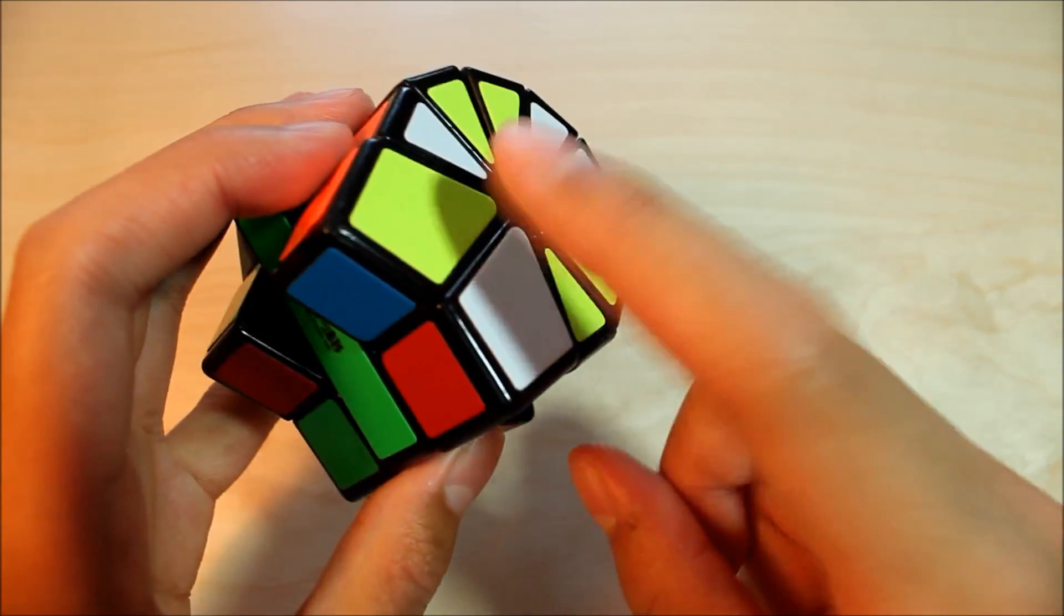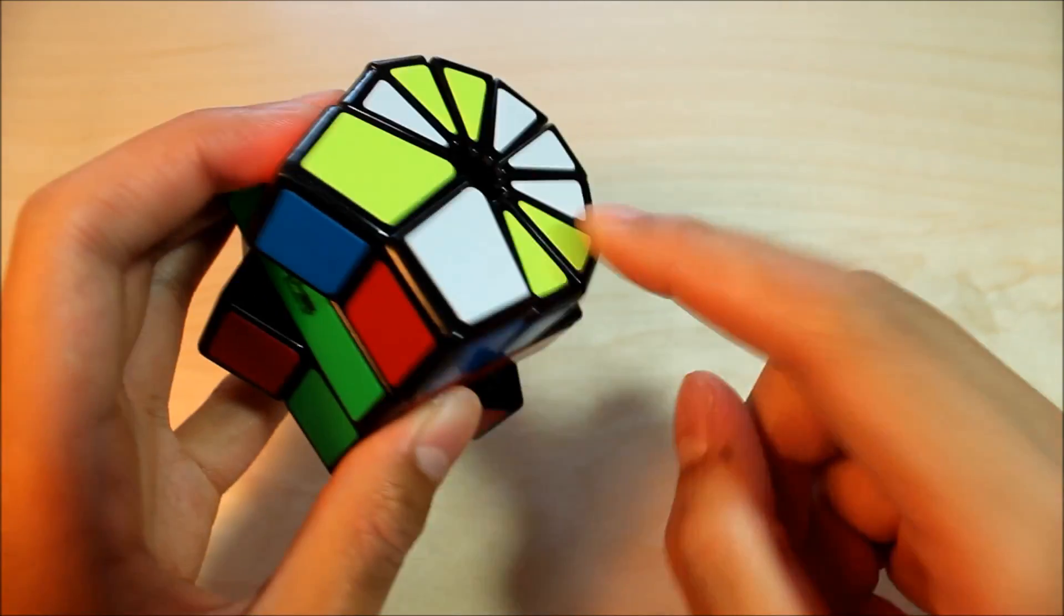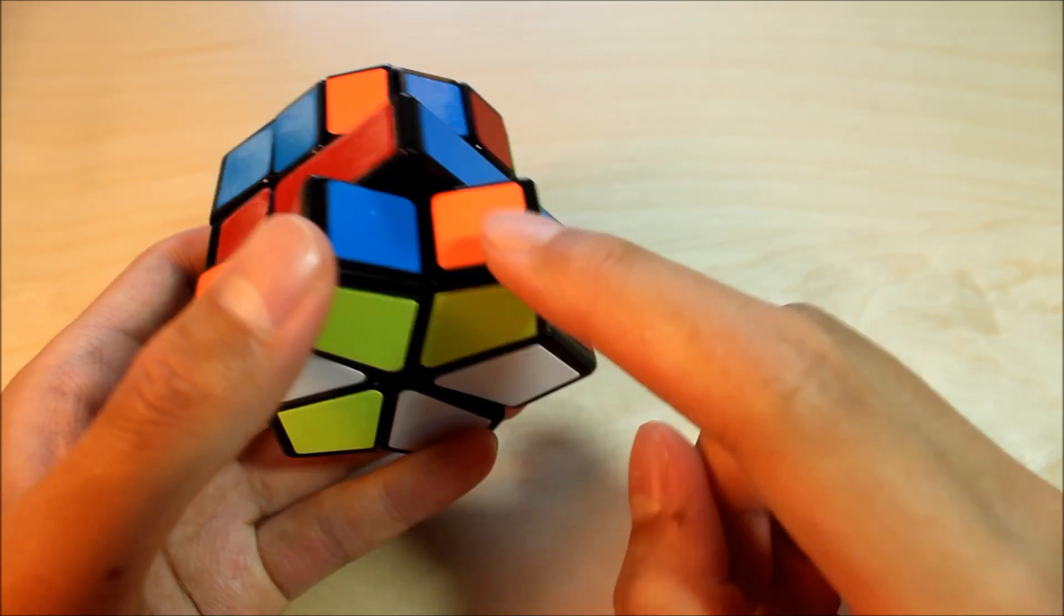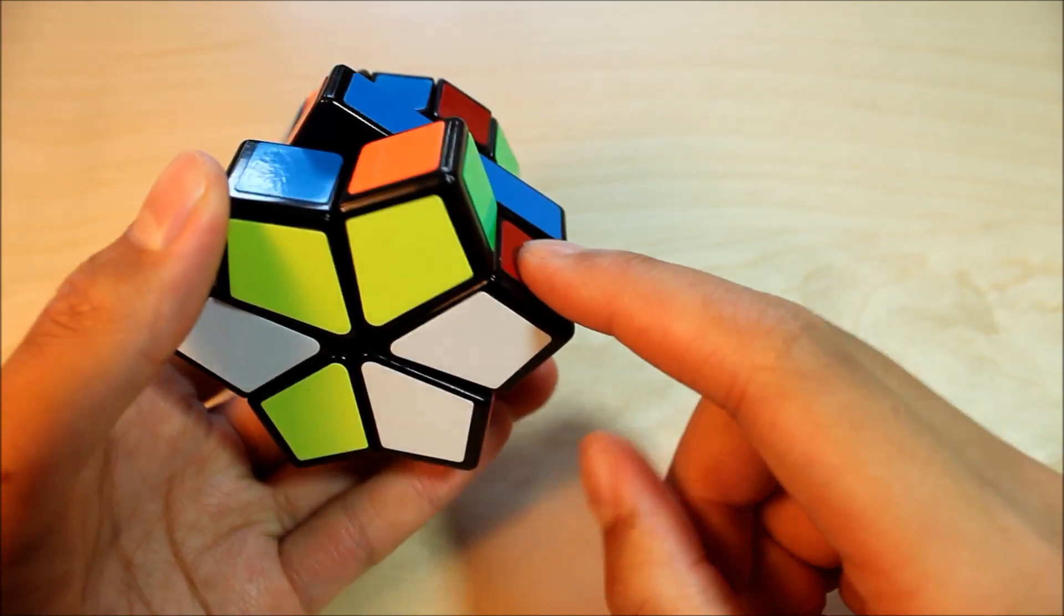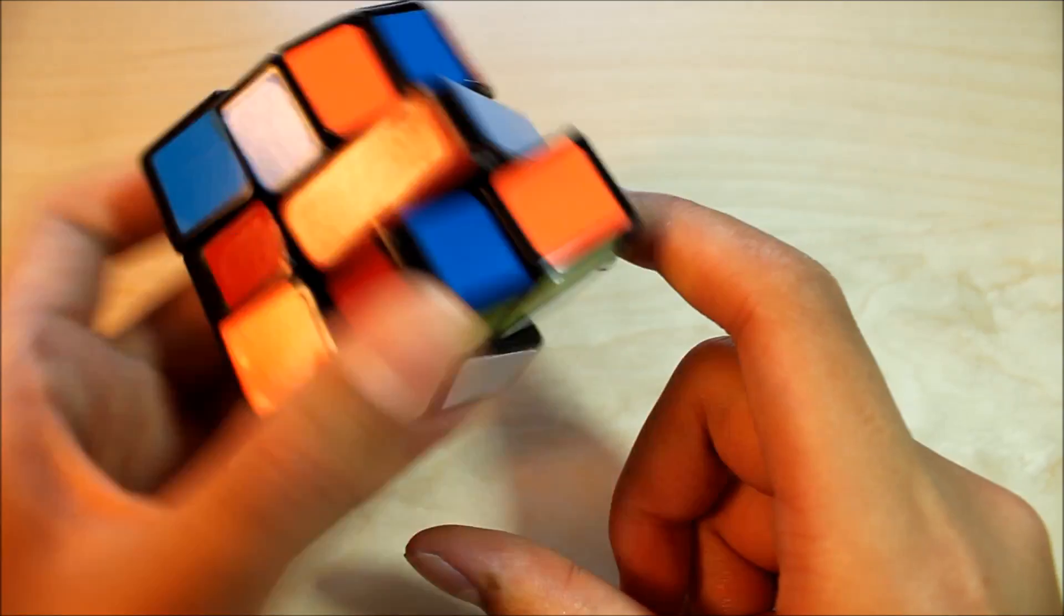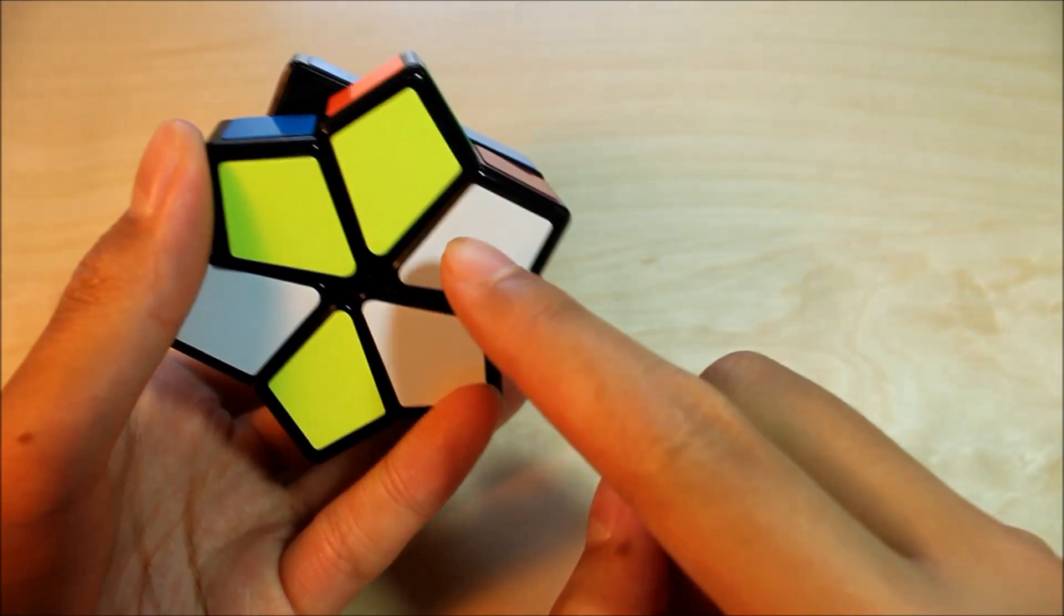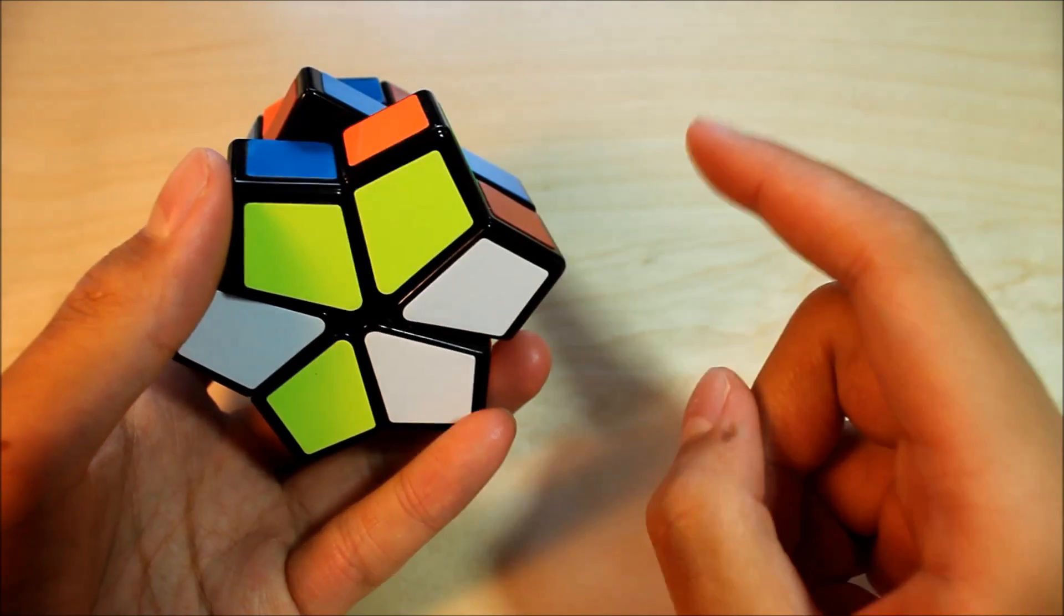We're gonna do the corners. We'll start here, go around here. So here, skip this one, here, skip this one, here, skip this one, and here. So we've got these four pieces. So we've got yellow, yellow, white, yellow. So we have one white piece. This means that we do have parity.